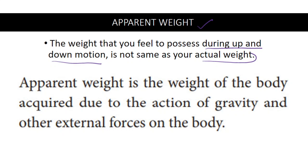You have to know what weight is. W is equal to m into g. Mass multiplied by acceleration due to gravity is weight — that is nothing but the gravitational force exerted on your body. Apparent weight is not a real weight. The weight you feel is the apparent weight.